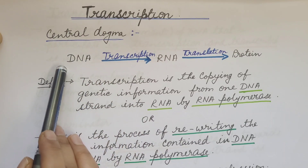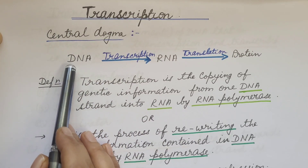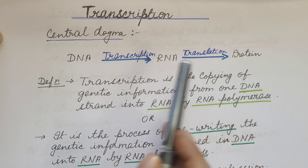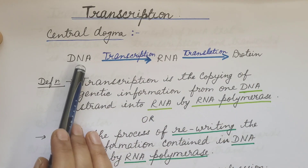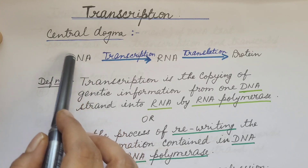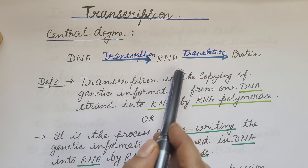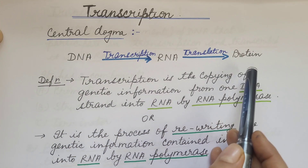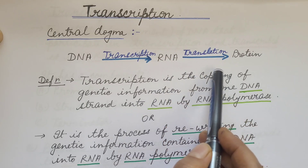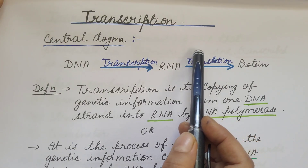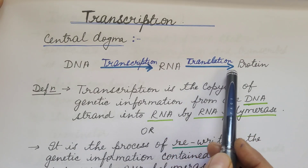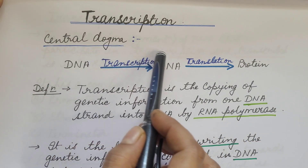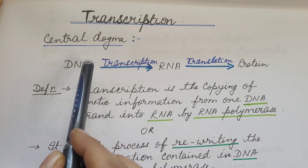The unidirectional flow of information from DNA to RNA to protein is known as central dogma. Flow of information from DNA to RNA is known as transcription, and from RNA to protein is known as translation. Translation we will discuss in a separate series of videos; here we will discuss about transcription.